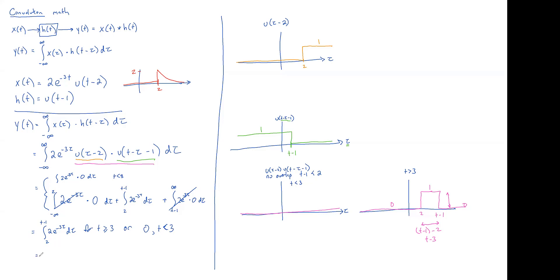Now we can evaluate the integral. The 2 comes out front. The antiderivative of e^(-3τ) is -⅓e^(-3τ), evaluated between τ=2 and τ=t-1. This gives -⅔ times [e^(-3(t-1)) - e^(-6)], or 0 if t < 3.